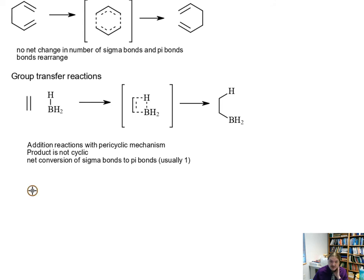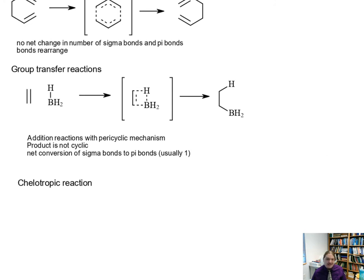There is one final kind of pericyclic reaction, and that is the cheletropic reaction. The cheletropic reaction is kind of like a cycloaddition—kind of like a smush between a cycloaddition and a group transfer. To give you an example of this one, let's use the reaction between an alkene and bromine.